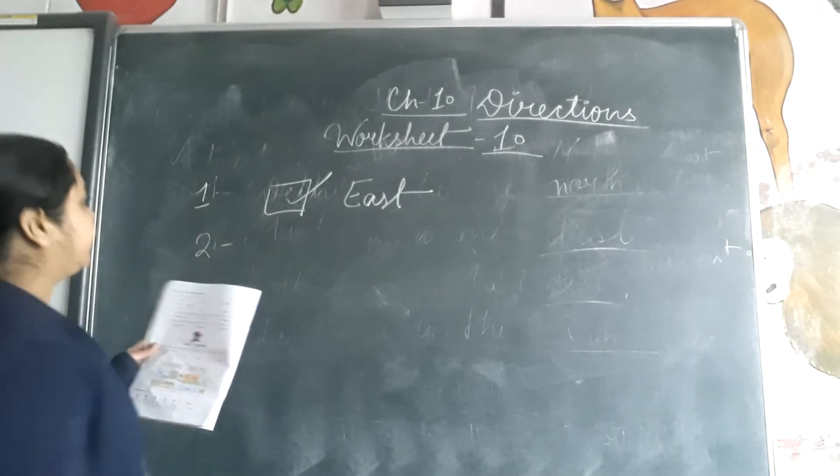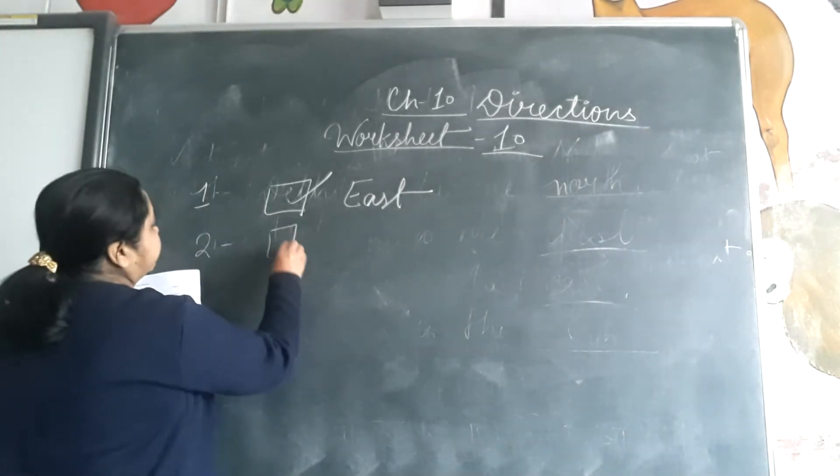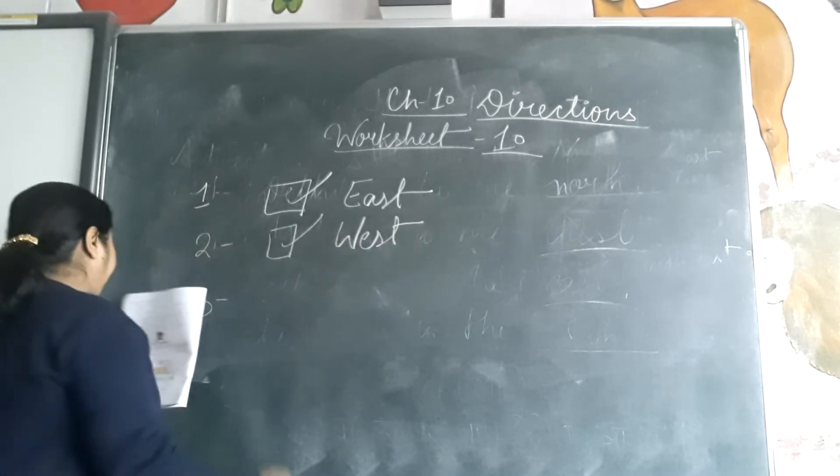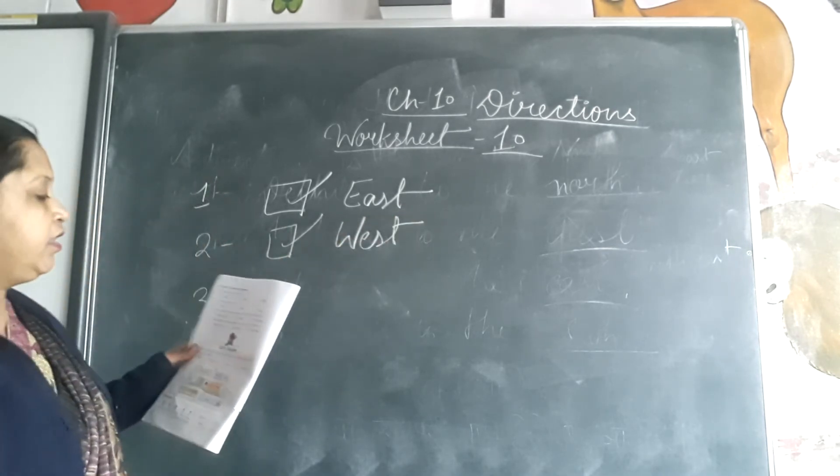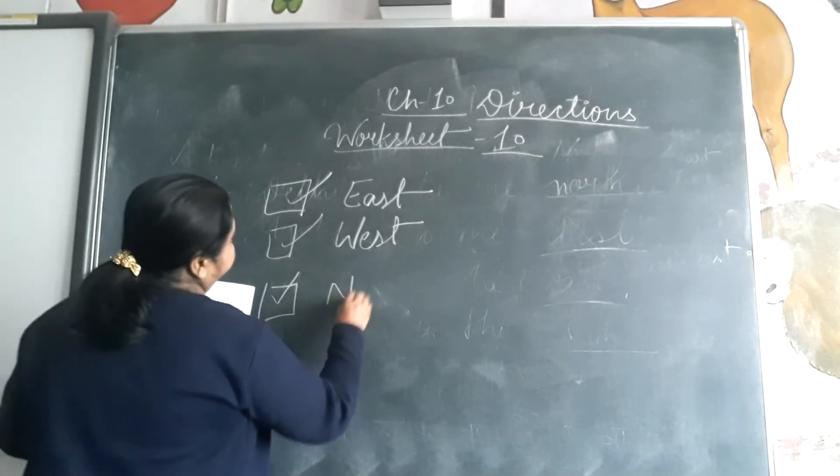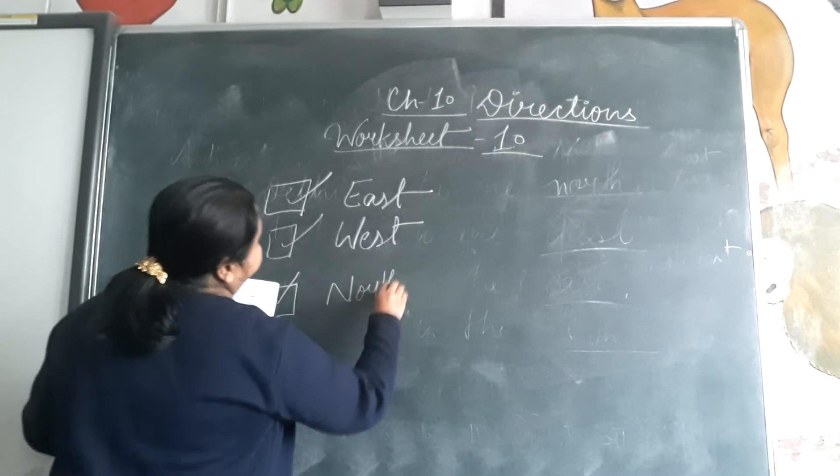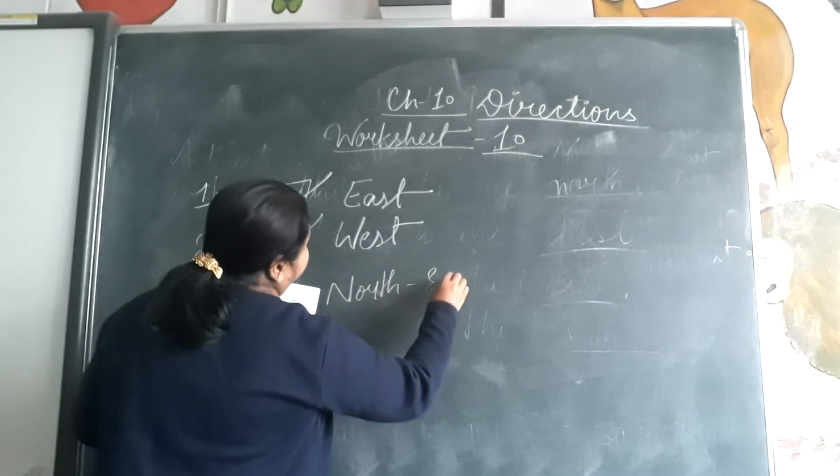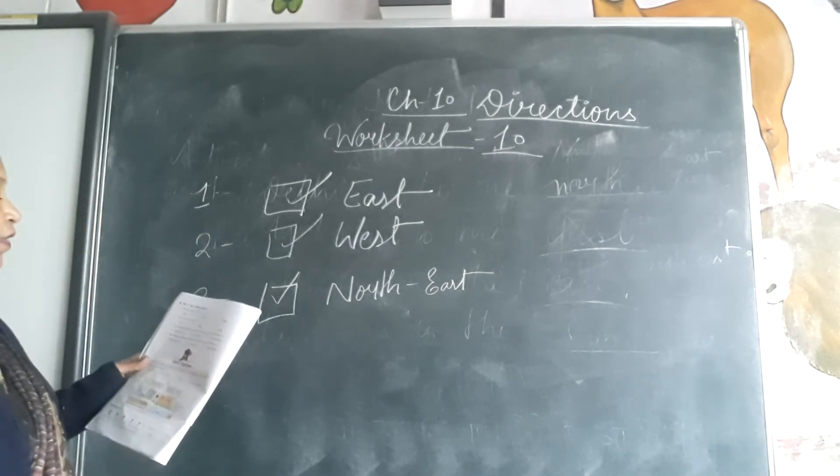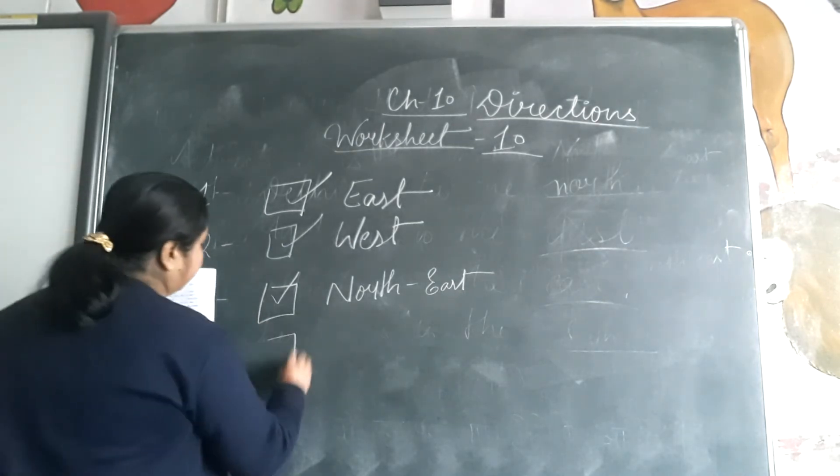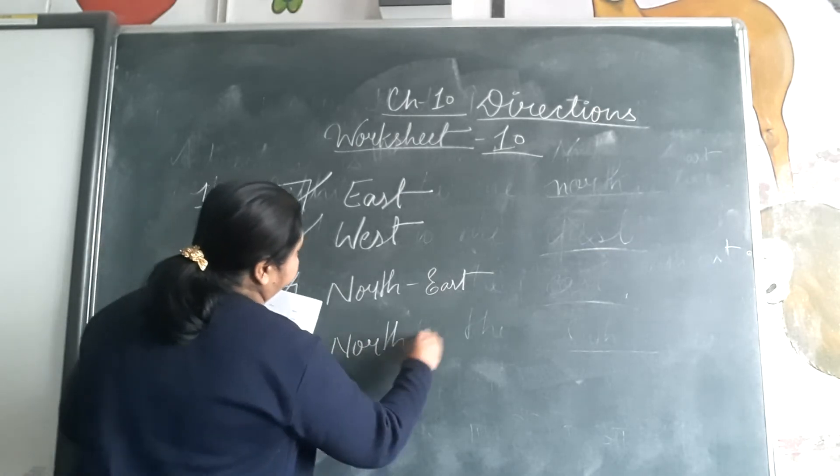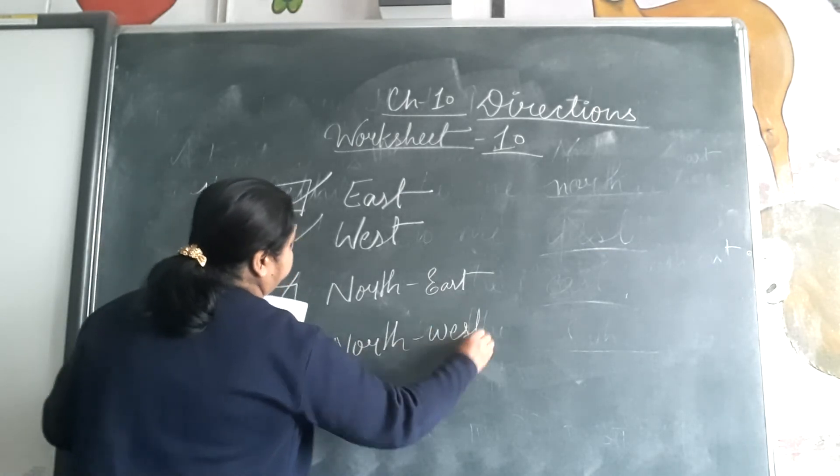Second, the sun sets in the west. Number three, the direction halfway between the north and east is northeast. Next, the direction halfway between the north and west is northwest.